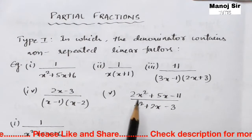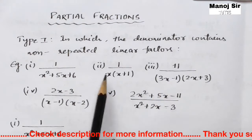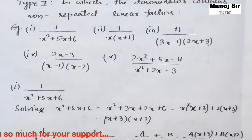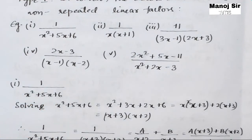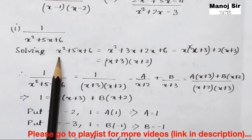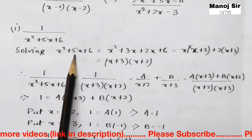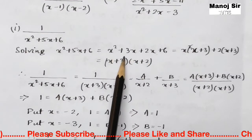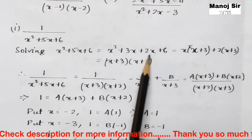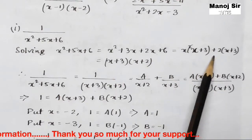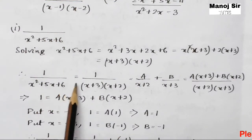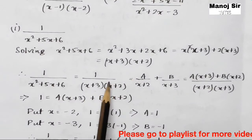Let us start with the first example: 1 upon x² + 5x + 6. First we need to factor the denominator. We can split 5x into 2x + 3x. Taking x common gives x(x+3), and taking 2 common from the remaining gives 2(x+3). So x² + 5x + 6 = (x+3)(x+2). Therefore the expression becomes 1 upon (x+3)(x+2).